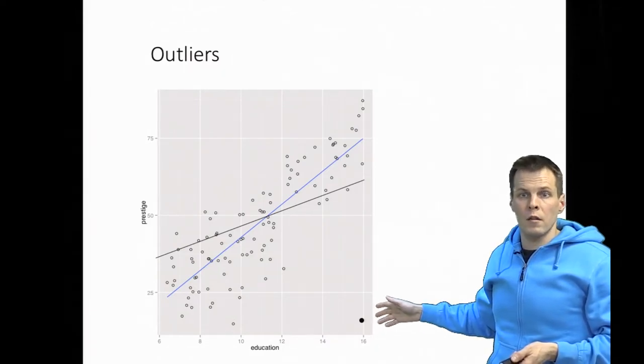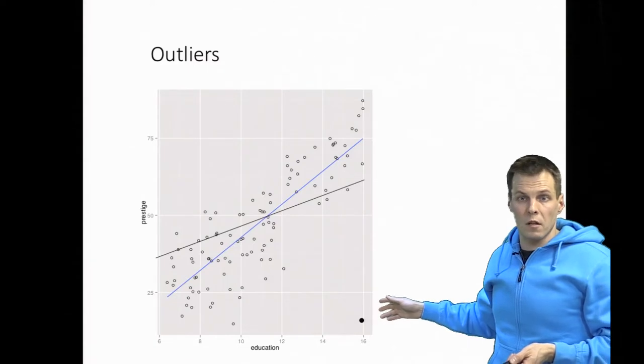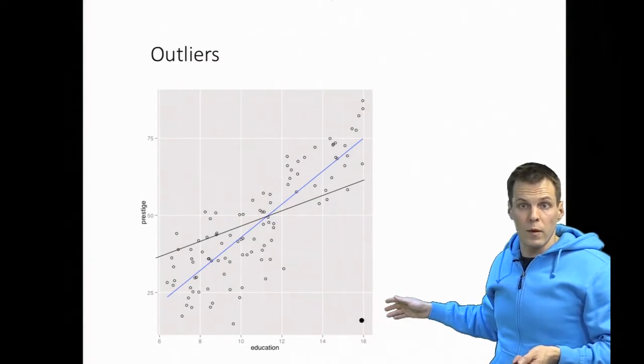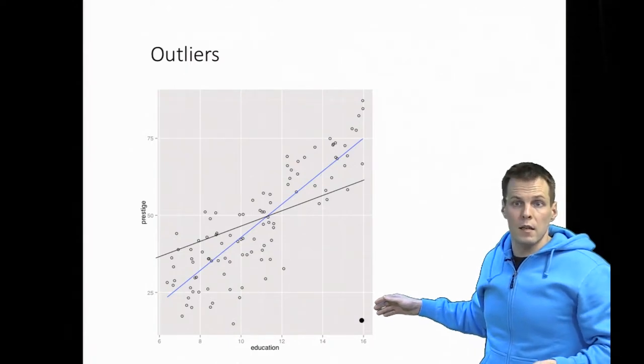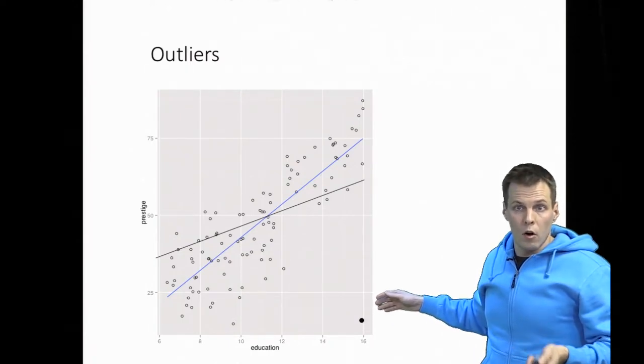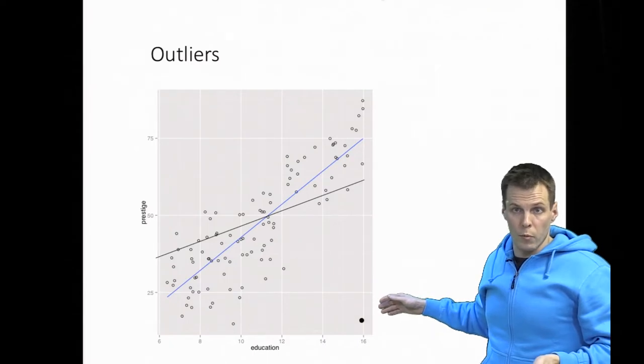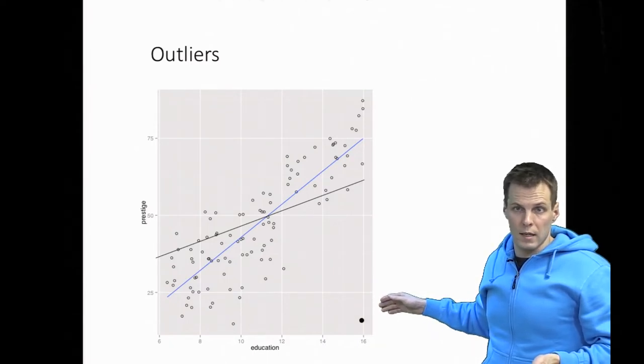Outliers could be observations that are truly unique and could be worth studying separately as case studies. They could be data entry mistakes, or they could be observations that don't belong to our population and were included in the sample accidentally.